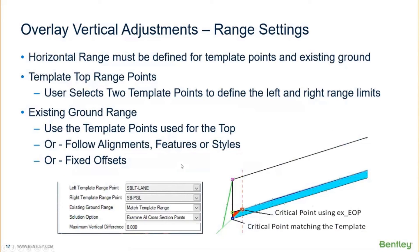Another portion of the tool you need to pay attention to are the range settings. This is the horizontal range it searches for template points across the top of the template. You need to specify a range or limit for it to search, typically selecting your edges of pavement on the left and right sides or your edges of shoulder. You need to select two template points to define the left and right range limits. You also need to tell it where to look for the existing ground range — you can use the same template points, look for alignments, feature definitions, or use fixed offsets.